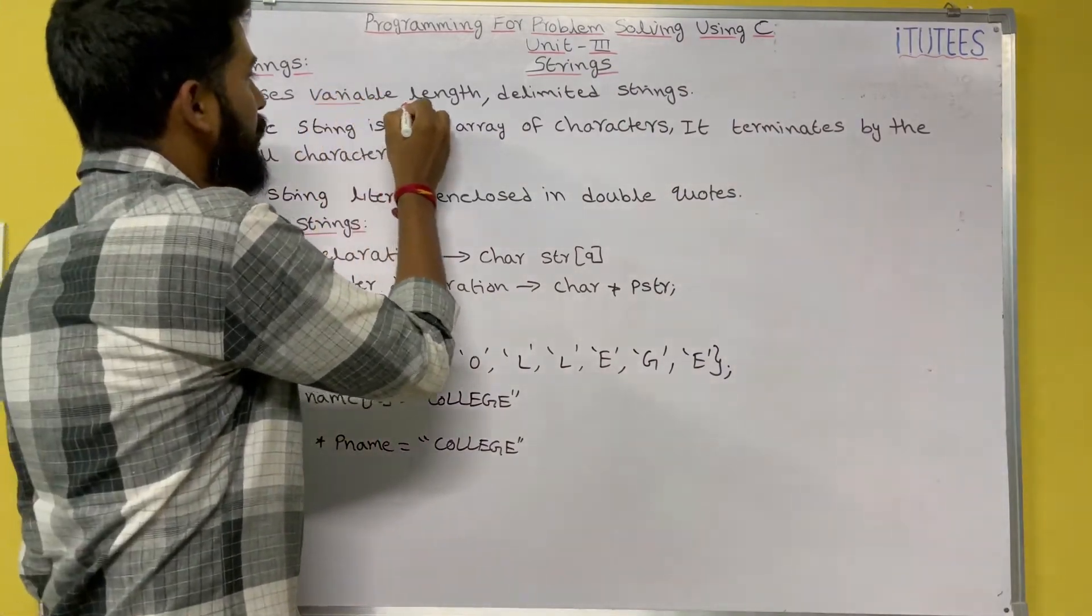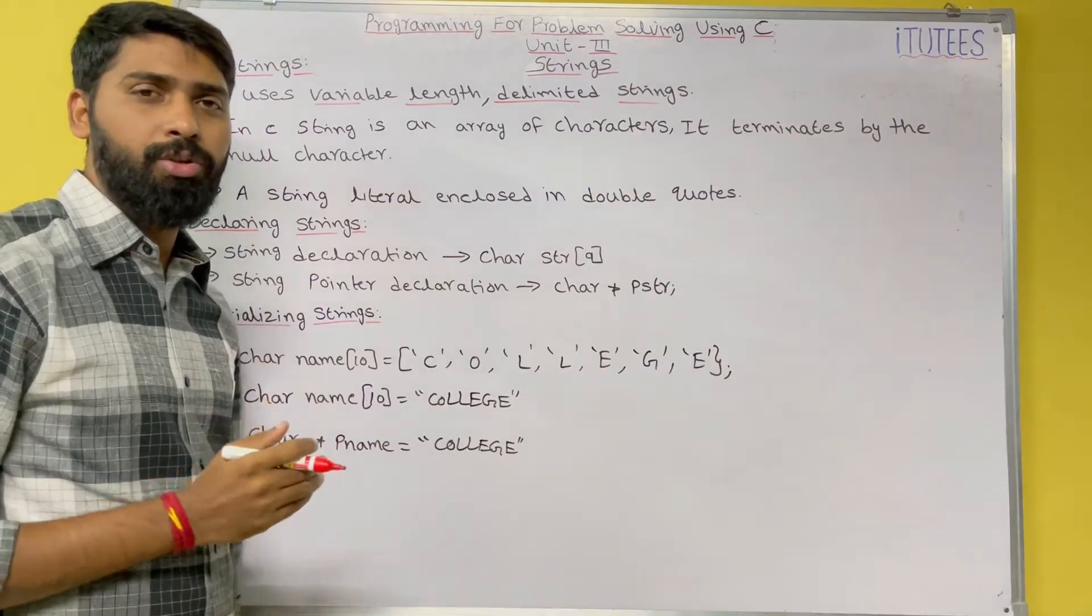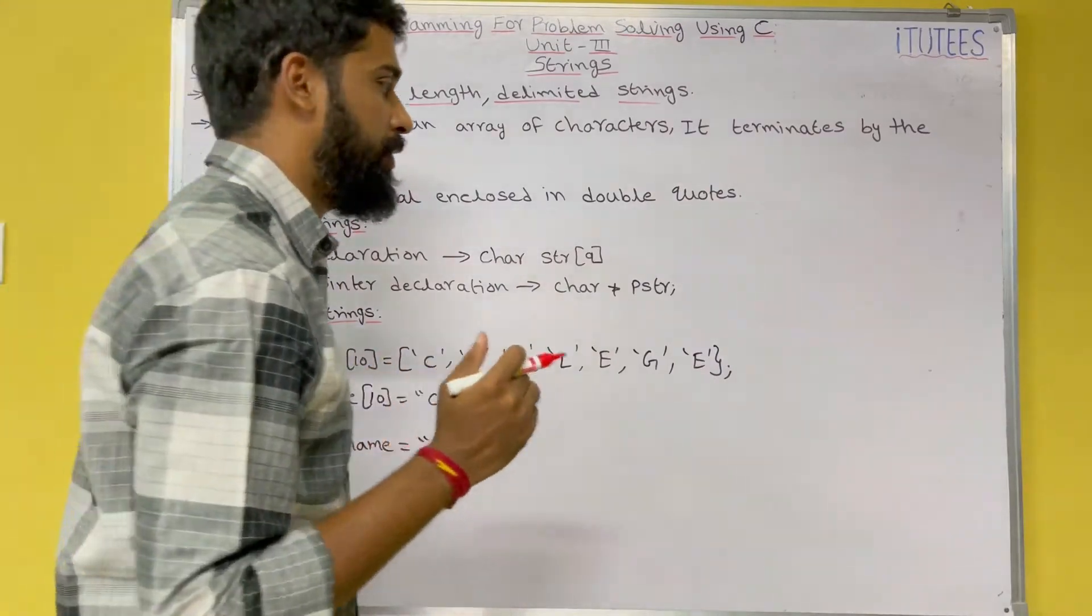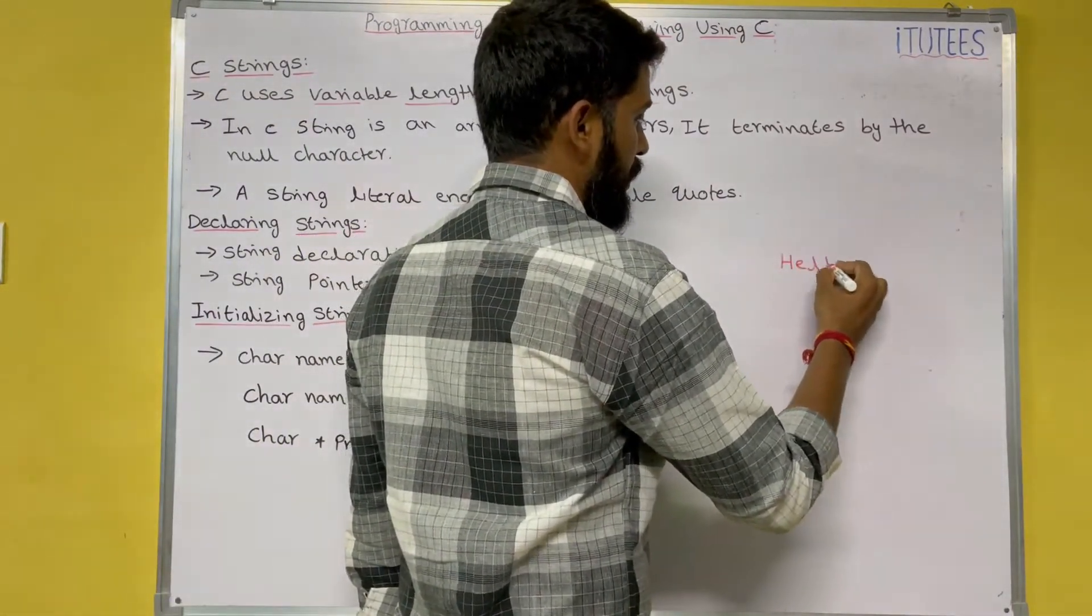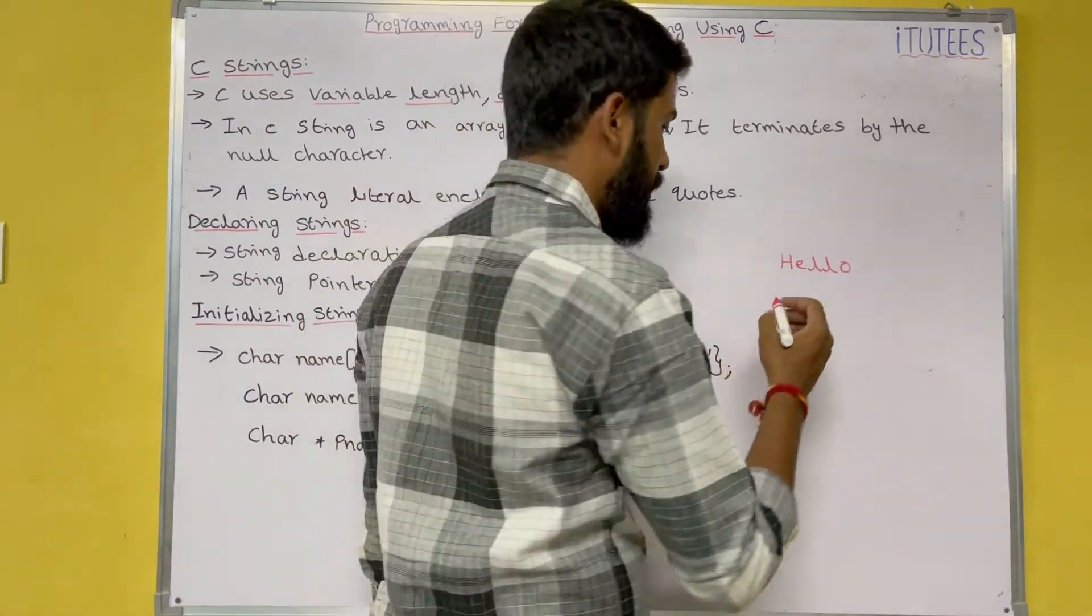C uses variable length delimited strings. In C language, you are going to use variable length and delimited strings. What it means, for example, so I want to store, I want to represent hello. How we can represent hello in C language?